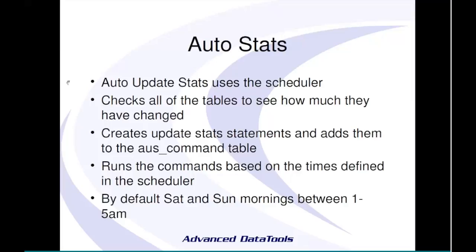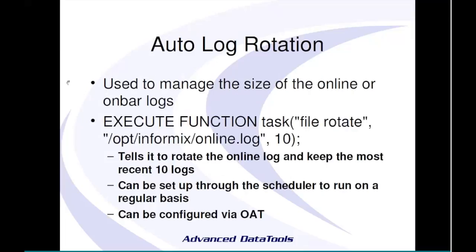Auto-log rotation is a nice feature I don't see used enough. It lets you rotate your online log, on-bar log, or whatever logs you want using the scheduler or manually. You tell it how many logs to keep, how long to keep them or until what size, and it automatically handles it. I've seen many people whose online log has seven years of data sitting at six gigabytes. On a small limited device, a 6 GB online log may be filling up your /opt partition, so you really want this on black-box systems.